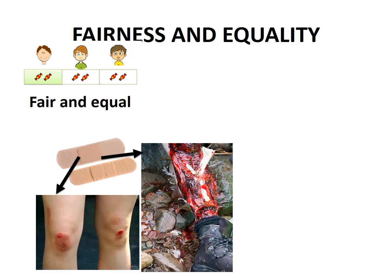Let's take a different situation. Here we have a case where one person has fallen over and grazed their knees, and the person on the right has had a terrible mountain climbing accident with a shattered leg. Now, let's suppose that we gave each of those people one band-aid each. We could say that treatment was equal — we're treating both people equally because they are both given one band-aid. But it's not really fair treatment, because the person who had the mountain climbing accident is in need of far more than just one band-aid, compared to the person who's just grazed their knees.